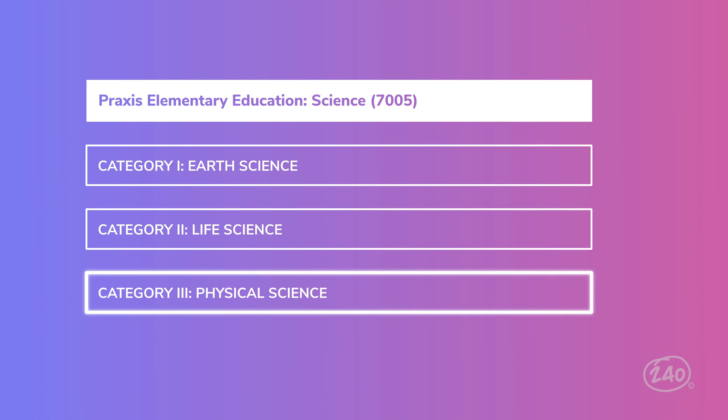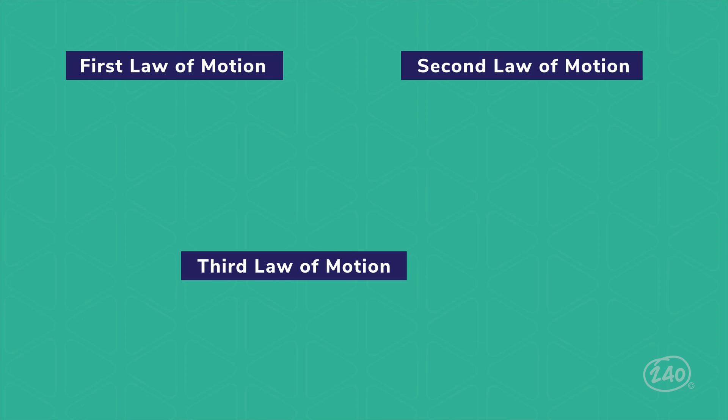Ready for the final third of your test? That comes from physical science. The three main things you'll see here are matter, force and motion, and energy. In the force and motion category, you're going to need to know all about Newton's laws. Like the difference between Newton's three laws of motion.